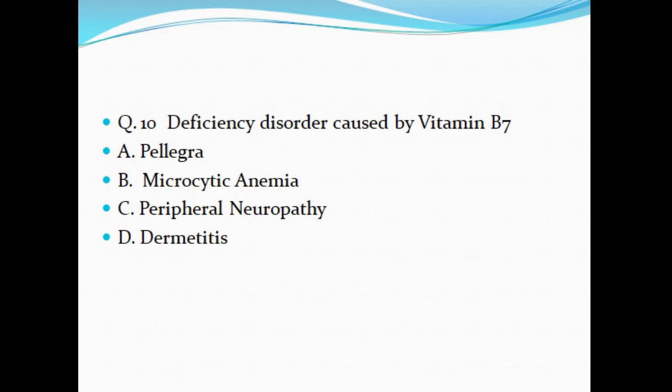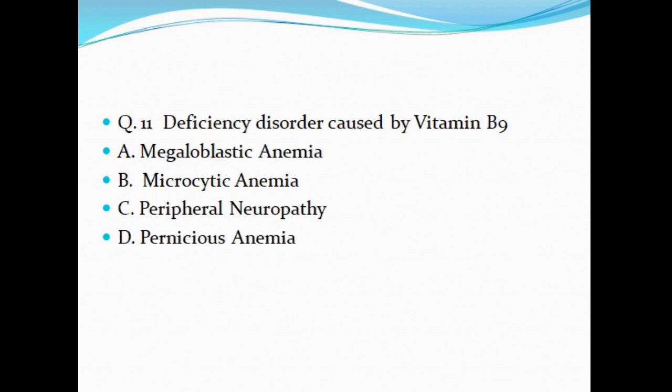Question 10: Deficiency disorder caused by Vitamin B7 — A. Pellagra, B. Microcytic anemia, C. Peripheral neuropathy, D. Dermatitis. Question 11: Deficiency disorder caused by Vitamin B9 — A. Megaloblastic anemia, B. Microcytic anemia, C. Peripheral neuropathy, D. Pernicious anemia.